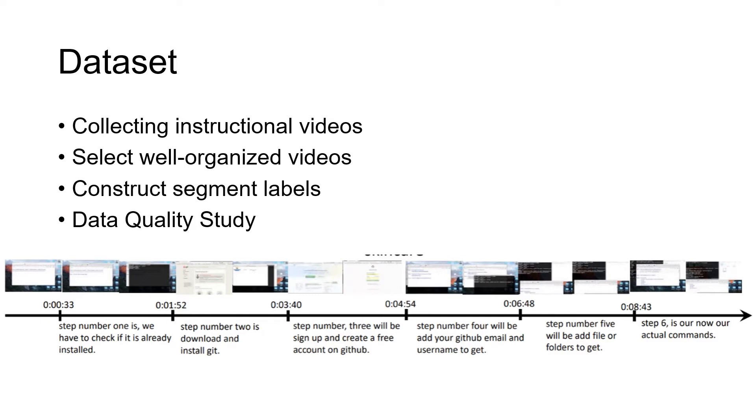First, we collect instructional videos by searching the video titles using keywords like how-to. Then we select the well-organized video by filtering out some invalid videos like either too long or too short. Then we take the ground-truth segmentation time step and finally we do the data quality check. The difference between the TIPS dataset and the existing dataset is that TIPS is large-scale and open-domain, and also TIPS are continuous and automatically generated.